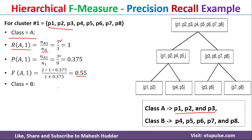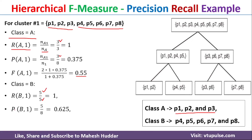The next one is class B. The recall of class B with respect to cluster 1 equals 5 by 5, because the number of objects present in class B is 5 and all of them are present in cluster 1, so numerator is 5 and denominator is 5. Precision of B1 equals 5 by 8, because there are 5 objects of class B in cluster 1 and 8 objects total in cluster 1, which equals 0.625. The F-measure of B1 equals 2 times 1 into 0.625, divided by 1 plus 0.625, which equals 0.77.